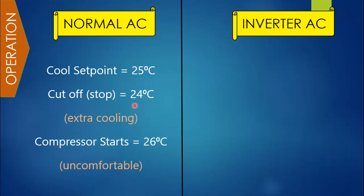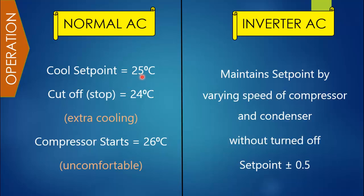So how does a normal AC operate? Let's say the cooling setpoint is 25°C. When it cools the room to 24°C it will cut off, and then the outdoor unit will start again at 26°C. You can see that first it provides extra cooling, then it shuts down and restarts at 26°C — so this temperature will again be uncomfortable, since the set temperature is 25°C.